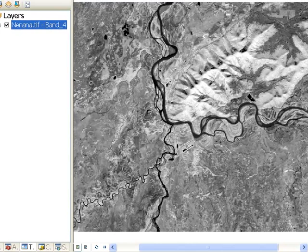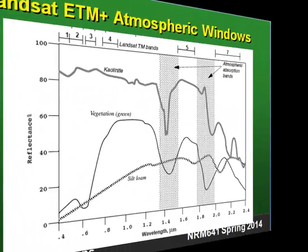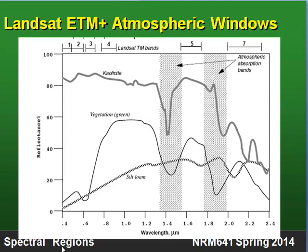Welcome back to remote sensing applications using ArcGIS. In this session I'll teach you about a spectral region just farther than the near infrared spectral region called the shortwave infrared spectral region. As a review, the visible spectral region goes from about 0.4 to 0.7 micrometers, the near infrared spectral region would be from about 0.7 to 1 micrometers, and then the shortwave infrared spectral region will be from about 1 micrometer to about 2.5 micrometers.